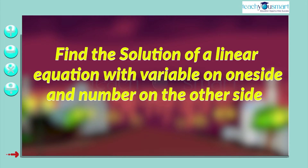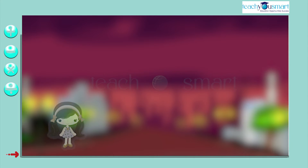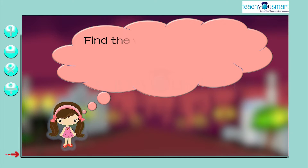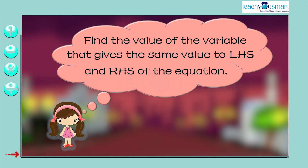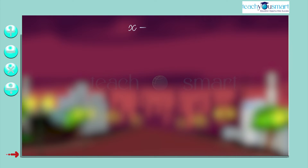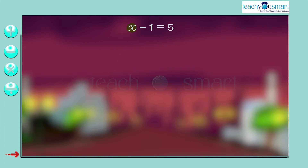Now we will try to find the solution to a linear equation with a variable on one side and a number on the other side. We want to find the value of the variable that gives the same value to LHS and RHS of the equation. Take the equation x - 1 = 5. We want to find the value of x, and there are two methods for that.